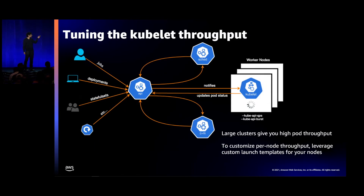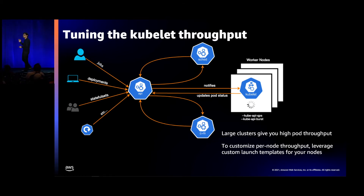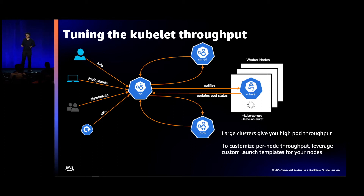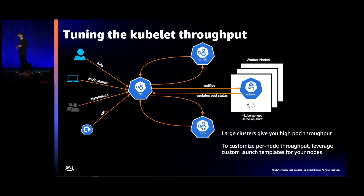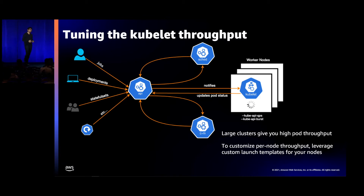The final piece is that once your pod is scheduled, the kubelet on your worker node picks up the pod, runs it, and notifies the API server — that is when you can finally consider your pod to have actually started. Your kubelets also need to start pods at a fast rate. By default in Kubernetes, the kubelet gets a QPS of five when making API calls to the API server. If you wanted to configure this, it is possible on Amazon EKS today using custom launch templates for your worker nodes. Alex will talk more about that.